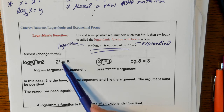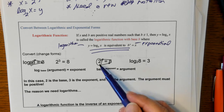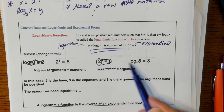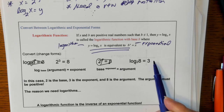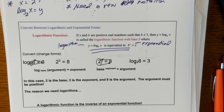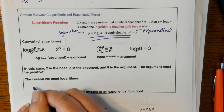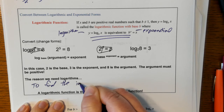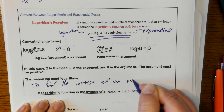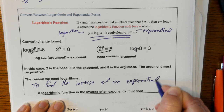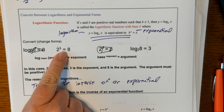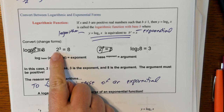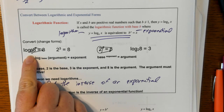We can convert from logs to exponentials, or convert an exponential to a log. Remember: the base of the exponent becomes the base of the log, and whatever the exponent is will be by itself when you convert to log form. The whole reason we need logarithms is to find the inverse of an exponential. So when you see a log, know that it is an exponential — they're just two different ways of saying the same thing. Two to the third power is eight, and log base two of eight is three. If you're having trouble with a log, convert it to an exponential, and vice versa.